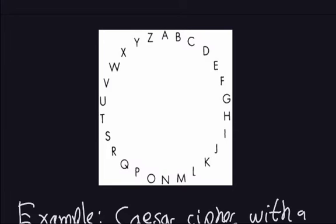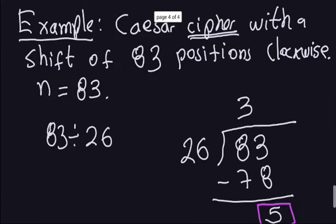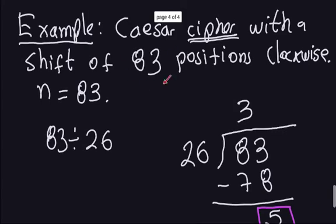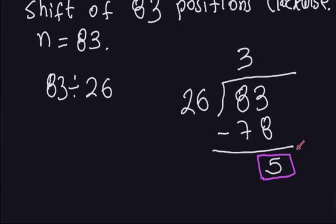Every letter is transformed the same way. For example, the letter G moved 83 positions clockwise is exactly the same as moving 5 positions clockwise. This is the importance of the fact: if you have a large number of positions clockwise — like 83, 100, or 1000 — you just divide by 26, take the remainder, and that remainder is the actual number of positions you have to move clockwise.